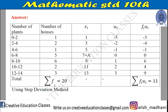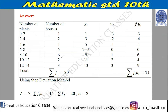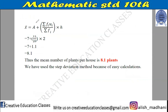Now we apply the formula: x̄ = a + (Σf_i·u_i / Σf_i) × h. What is a? From the table, a = 7. What is Σf_i·u_i? It is 11. What is Σf_i? It is 20. And what is h — the class length? h = 2. So we substitute: x̄ = 7 + (11/20) × 2.